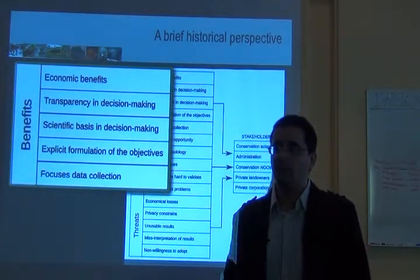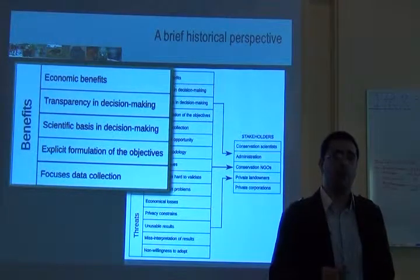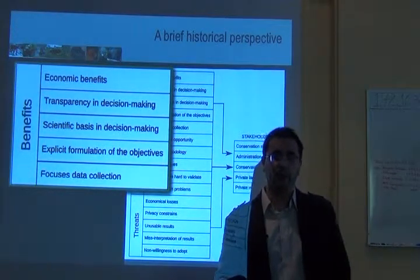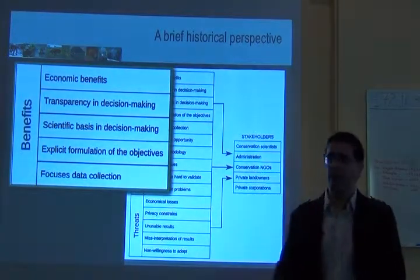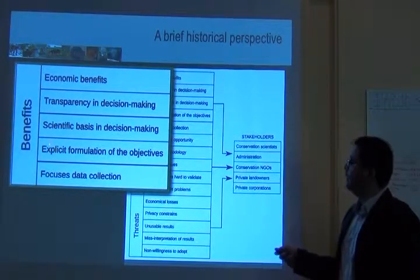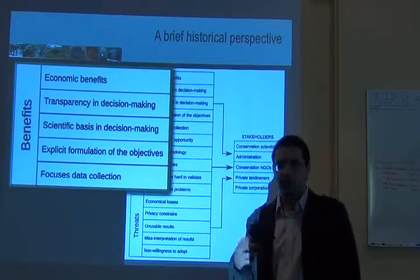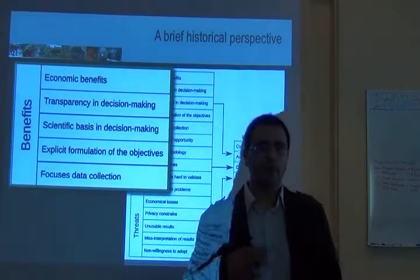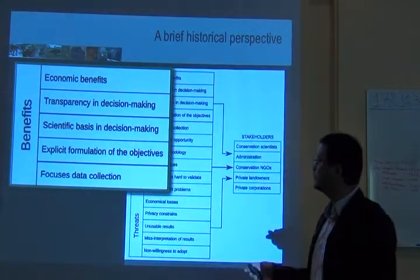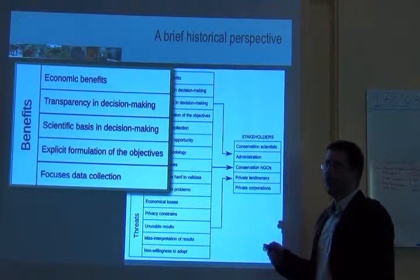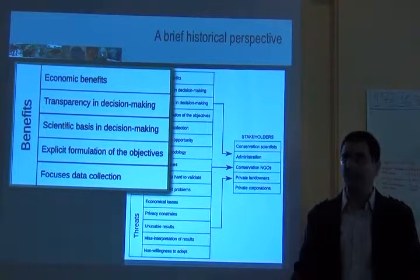Once you have a very clearly defined mathematical problem, it has transparency — anyone can understand what you're doing and can replicate it. You have a scientific basis in decision-making, so you're not choosing sites for any other reason; there is scientific knowledge behind it. You have an explicit formulation of the objectives because you're dealing with a formally defined mathematical problem.